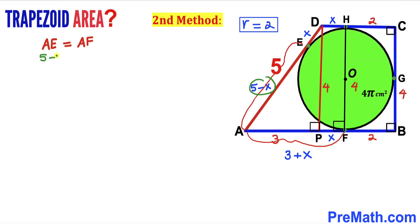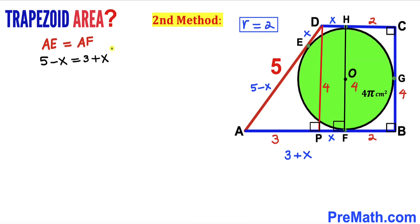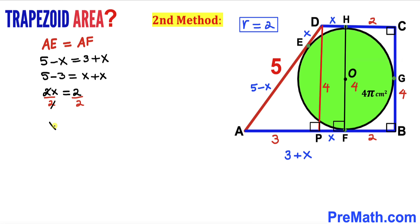Since AE = AF, we write: 5 − x = 3 + x. Moving terms: 5 − 3 = 2x, so 2 = 2x, giving x = 1 centimeter. Therefore DH = 1 centimeter and FP = 1 centimeter as well.